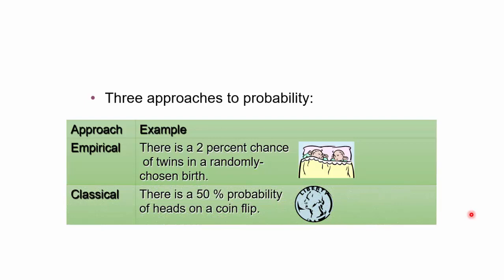Classical: 50% probability of a head in a coin flip. That can be estimated a priori using logic. It does not require one to perform the experiment time and again.